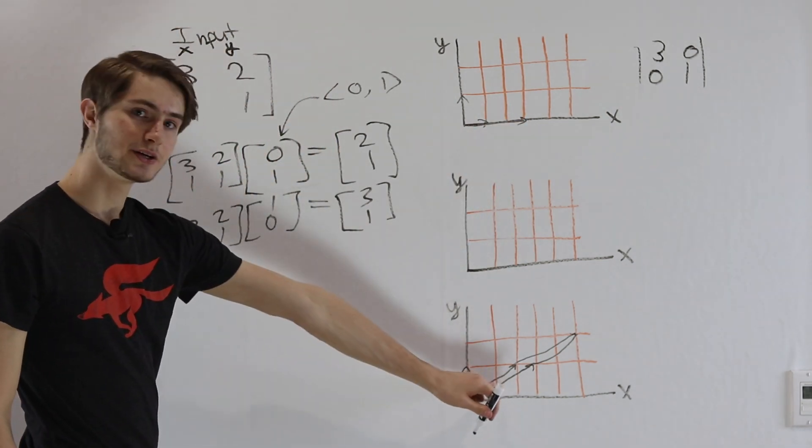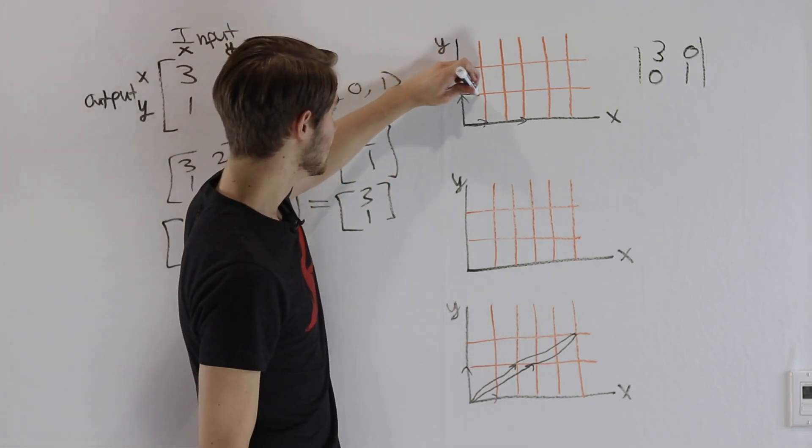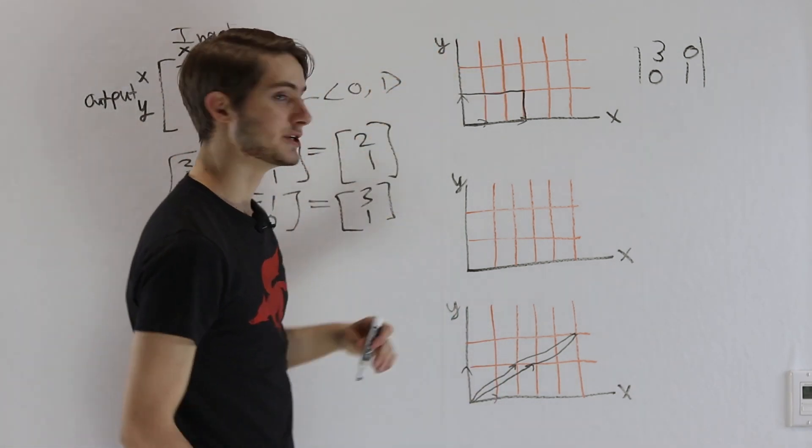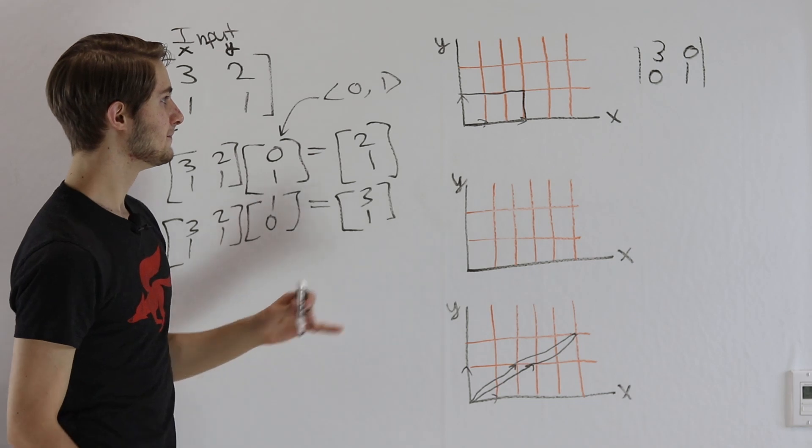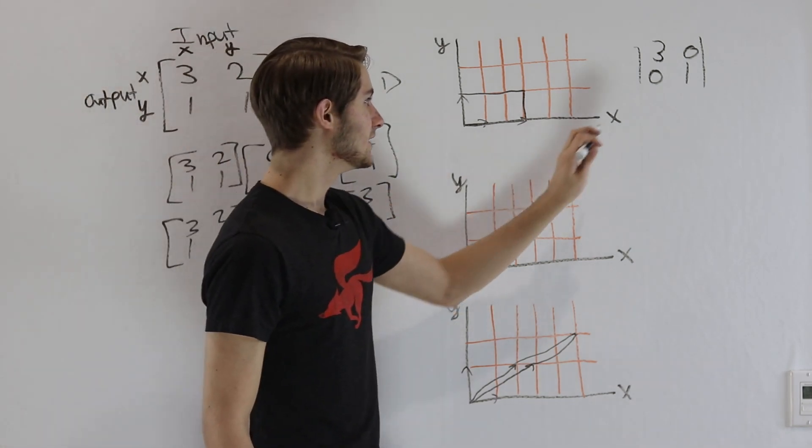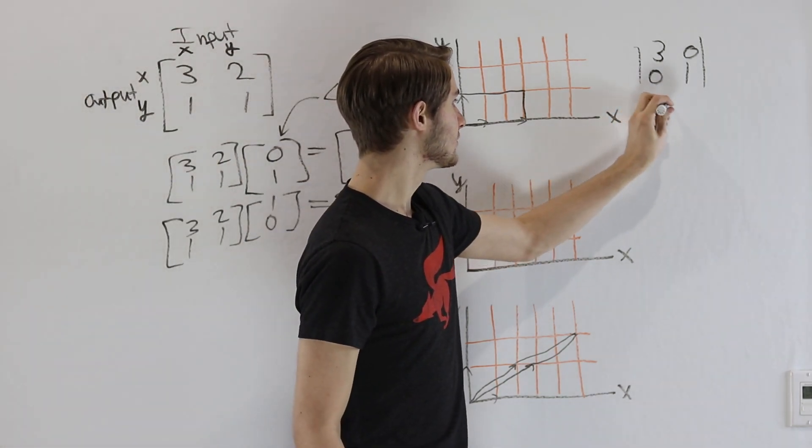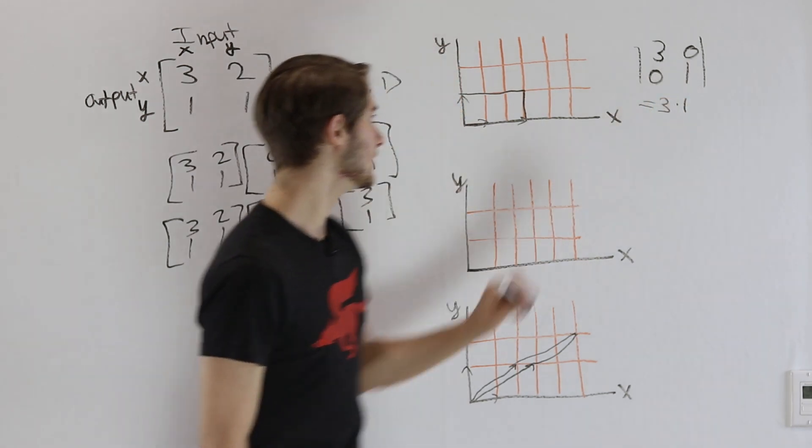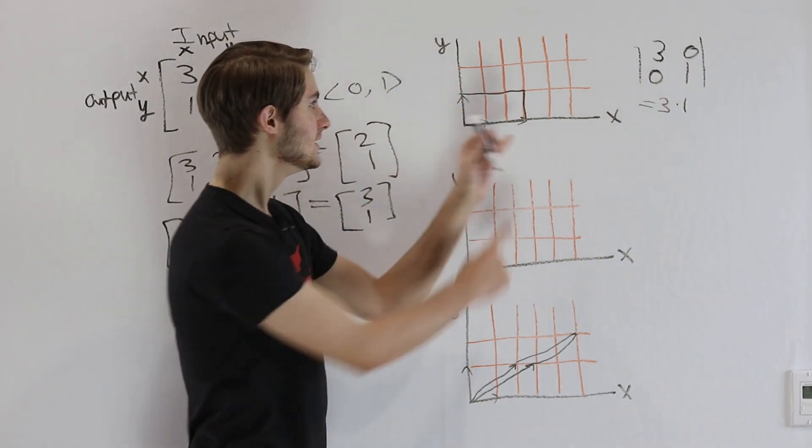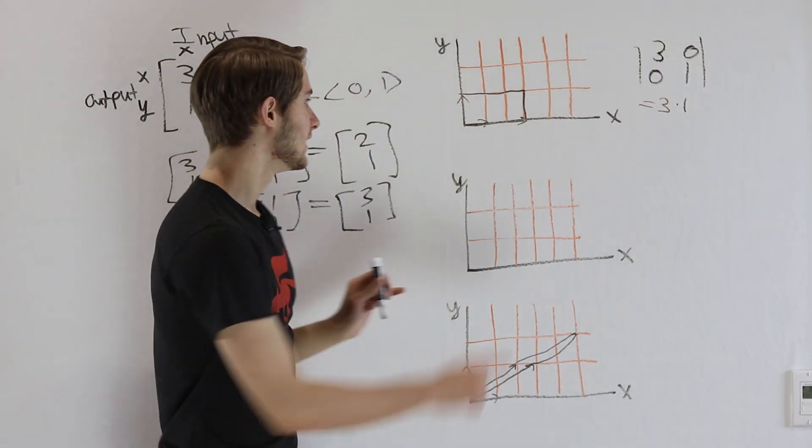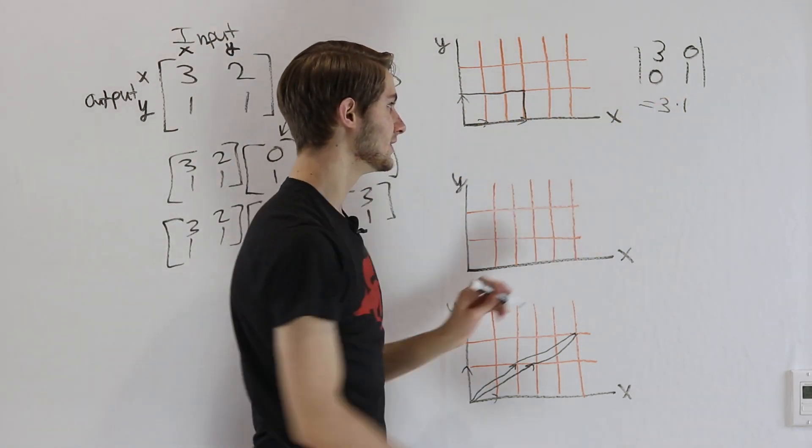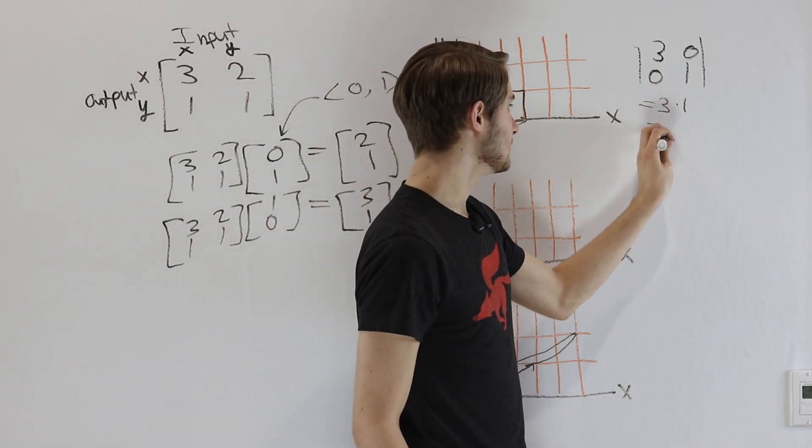So we don't have a parallelogram like we do down here. We just have a rectangle, which is a special case of the parallelogram. In this case the area is going to equal 3 times 1, because our base is 3, that's this 3 right here, and our height is 1, that's this 1 here, and that's going to equal 3.